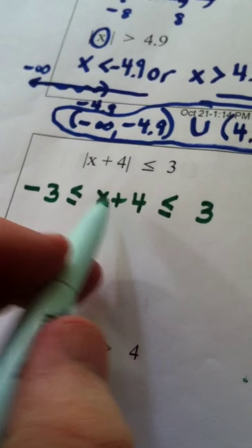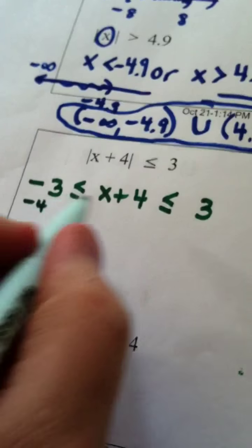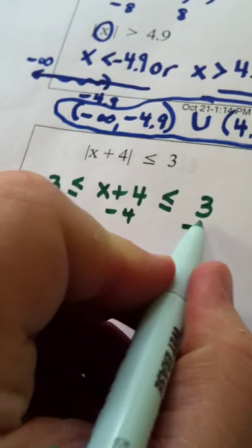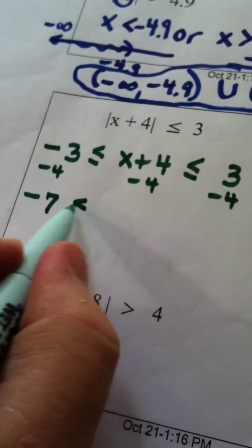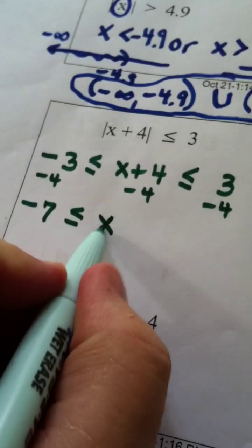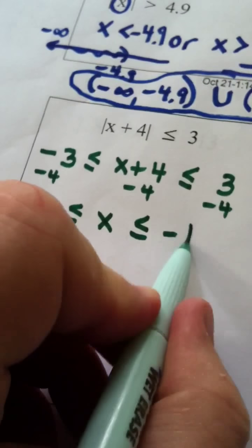To solve this, I subtract 4 from all parts, because when I'm solving a sandwich, I want to get x alone in the middle. So I have negative 7, I have x, and I have negative 1.